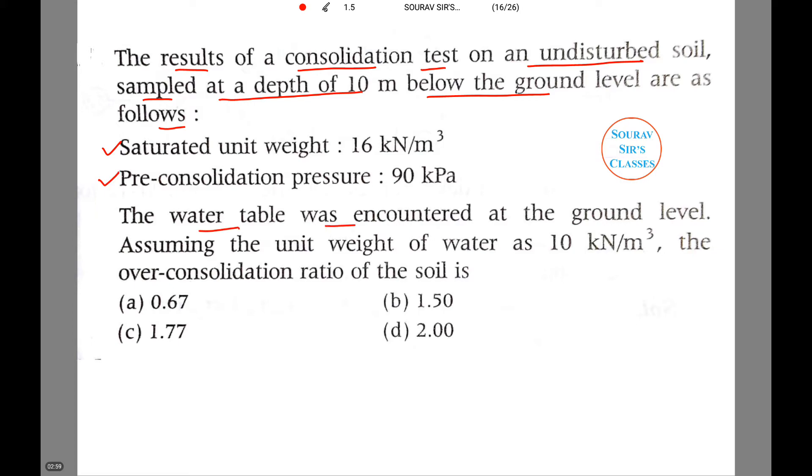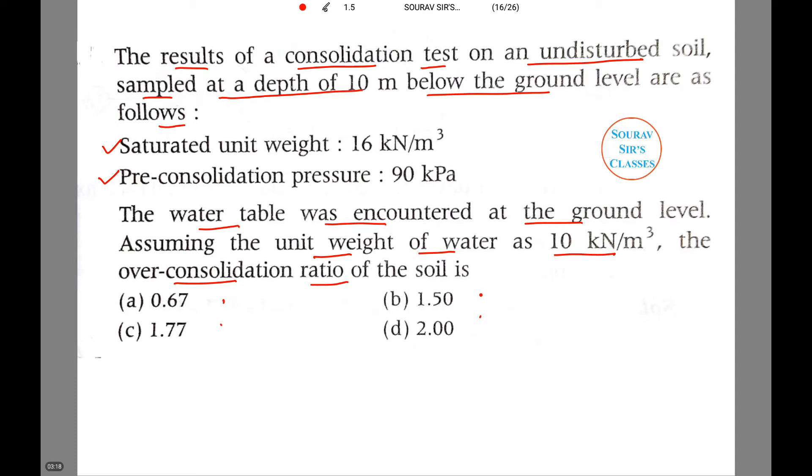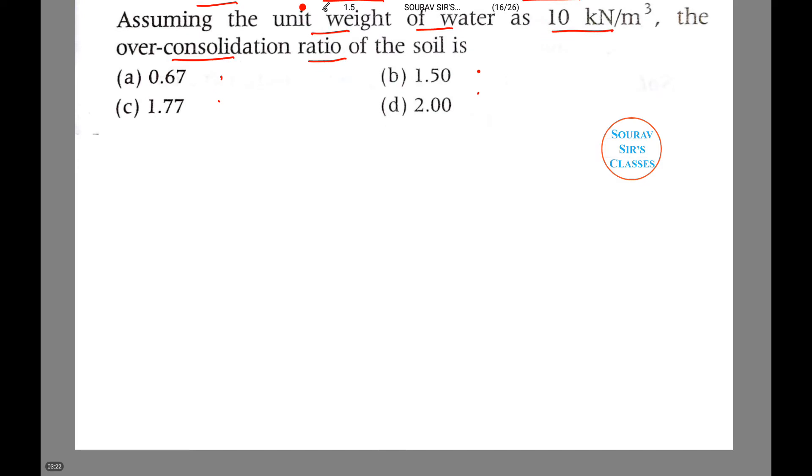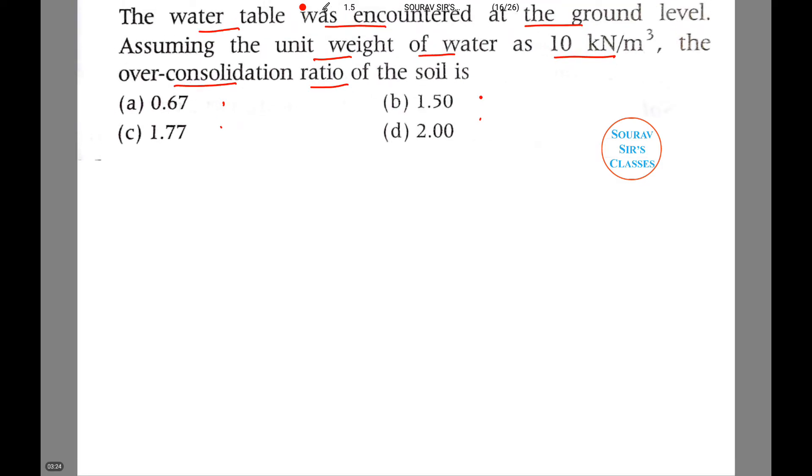The water table was encountered at the ground level. Assuming the unit weight of water as 10 kN/m³, the over-consolidation ratio of the soil is what we need to find. We have been provided with four options and we have to choose the correct one. So let's get started.